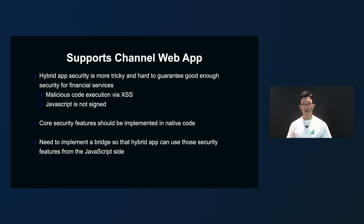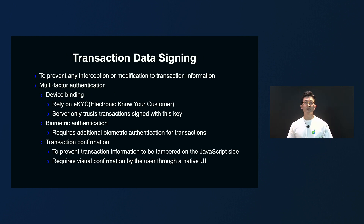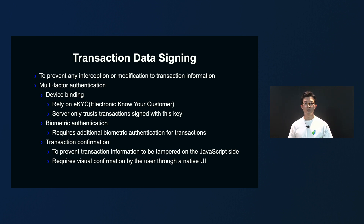For that, we need to implement a bridge so that the hybrid application can use those security features from the JavaScript side. One of the threat models we have is that the authentication token can be hijacked and transaction data can be maliciously modified on the JavaScript side. To mitigate those threats, the traditional way is to add a second factor of authentication, for example, a one-time passcode hardware security token. That way, even if the attacker has the authentication token, they will not be able to bypass the additional authentication factor. However, this second factor creates friction for the user experience, so we decided to make our own extra authentication layer to authorize user interaction.